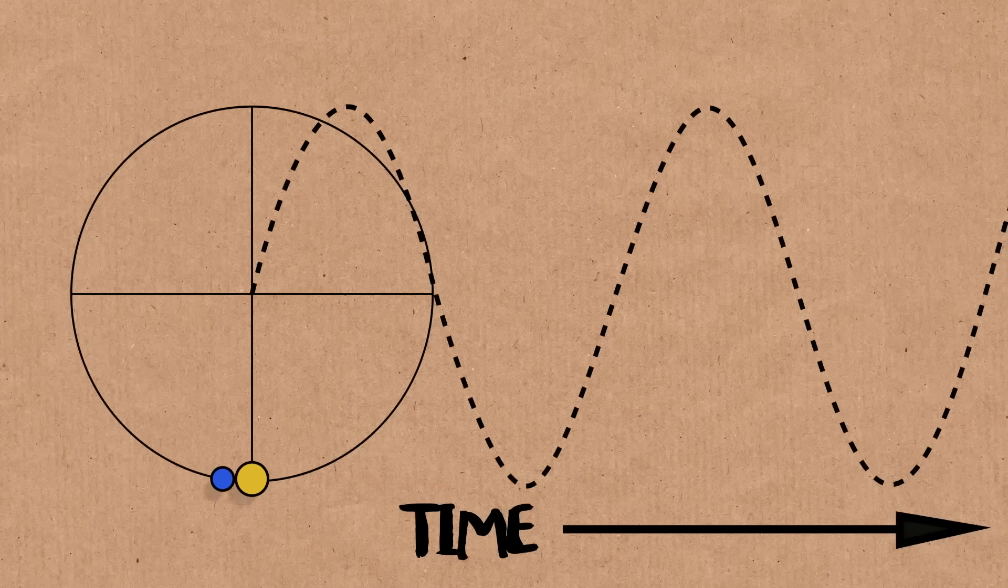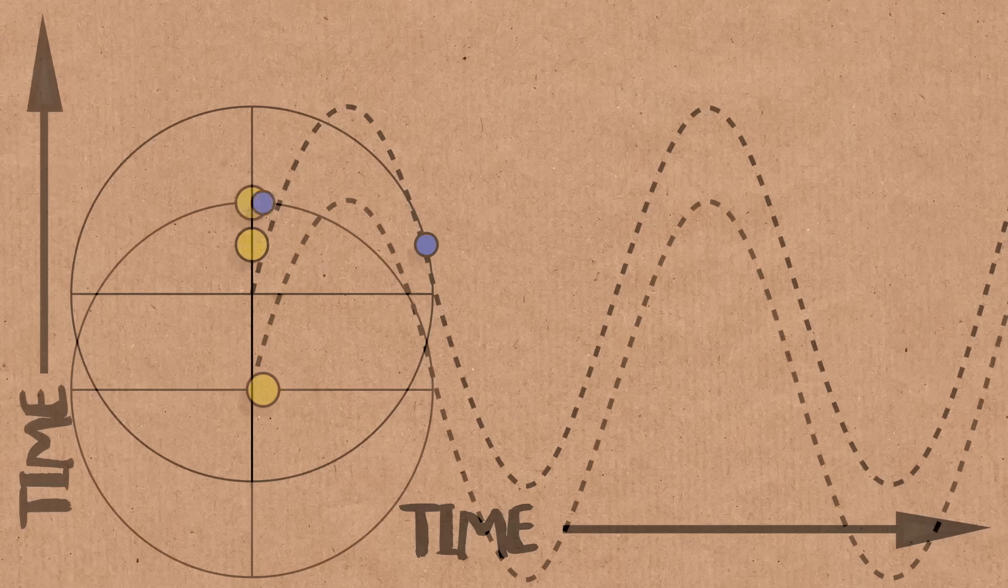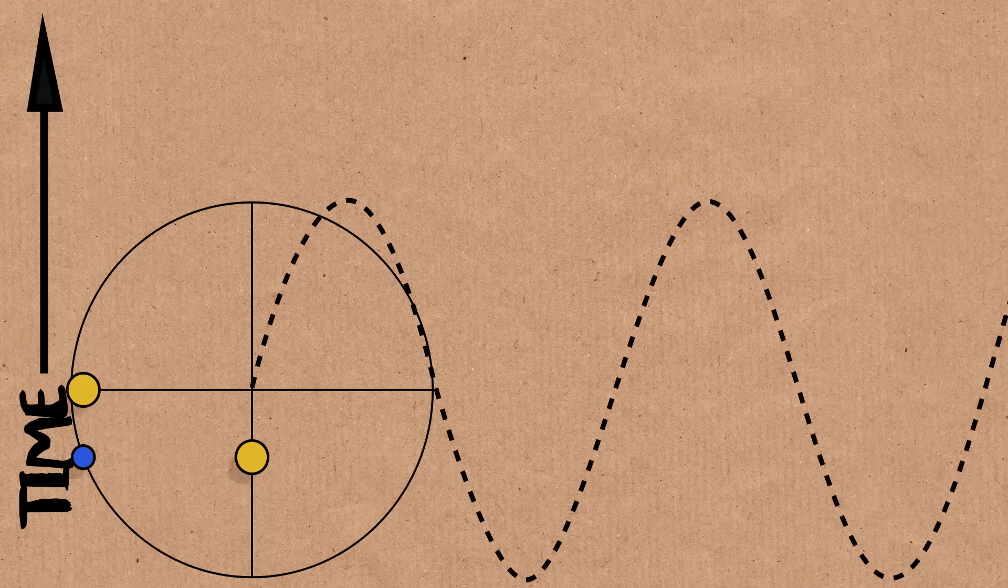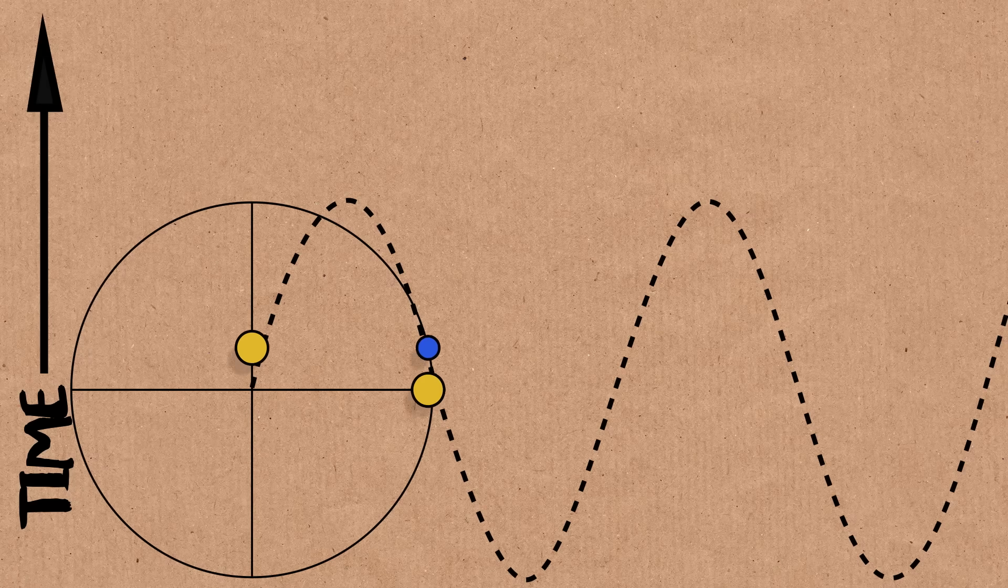Despite the name trigonometry coming from measuring triangles, I think it was the worst named topic in mathematics. Sine is a circular function. In fact, it's one of the circular functions.